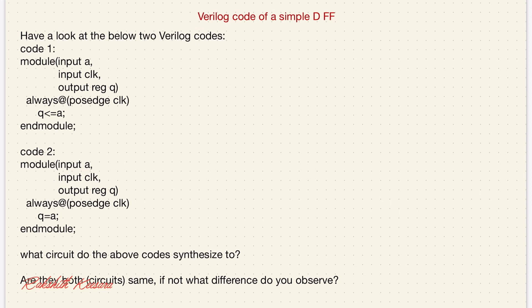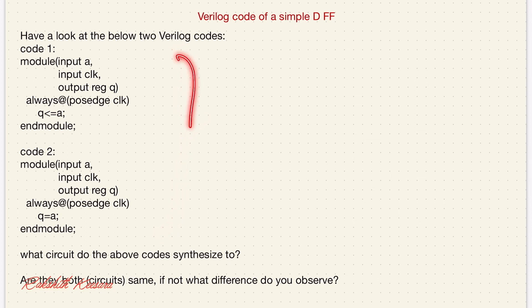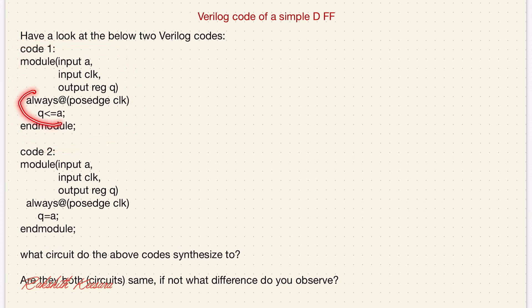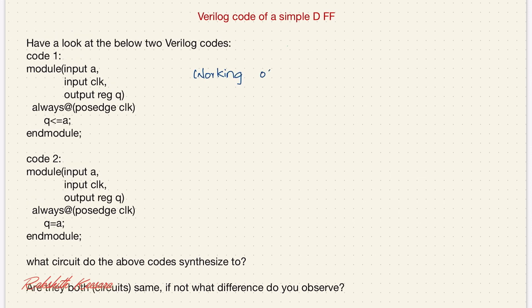Hi guys, welcome. This is the question that I posted on LinkedIn — let's have a quick look at it. In code 1, always at the positive edge of clock, q is equal to a, but here I am using a non-blocking assignment. In code 2, I am using a blocking assignment. To understand this code we need two things: the working of a D flip-flop, and the difference between blocking and non-blocking assignments.